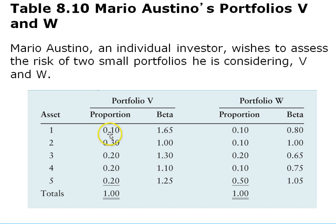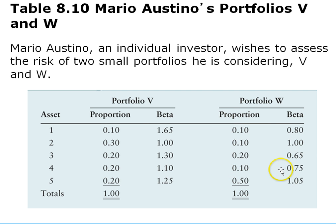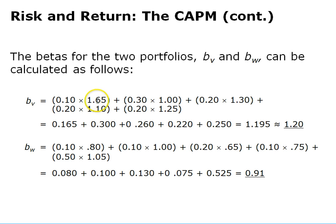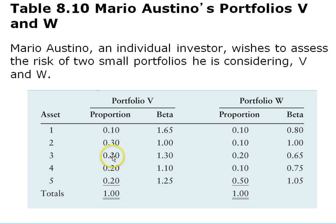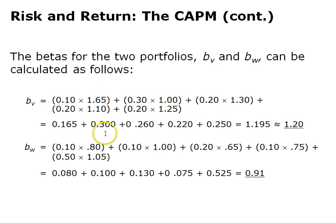Looking at this example: portfolio V has asset weights of 10%, 30%, 20%, 20%, and 20%, totaling 100%, with corresponding betas. Portfolio W has weights of 10%, 10%, 20%, 10%, and 50%. To calculate the weighted beta for portfolio V, we multiply each weight by its beta — 10% times 1.65, 30% times 1.00, 20% times 1.30, 20% times 1.10, 20% times 1.25 — add those results together, and get a weighted portfolio beta of 1.20. Portfolio W has a weighted beta of 0.91, so portfolio V is riskier than portfolio W.